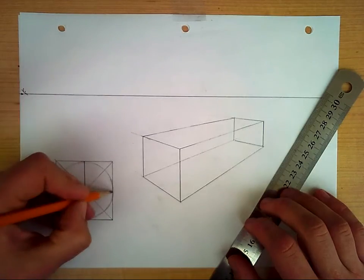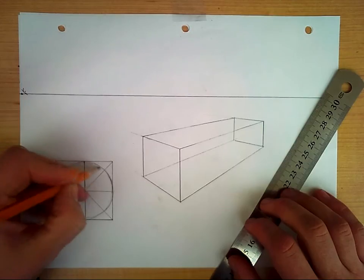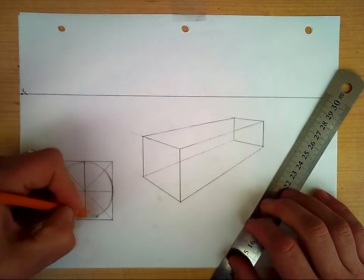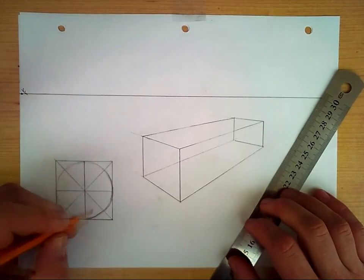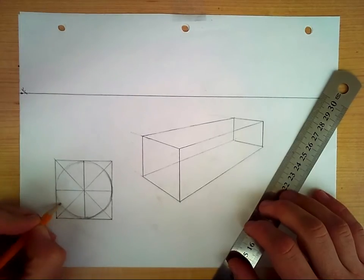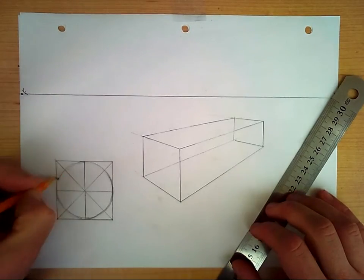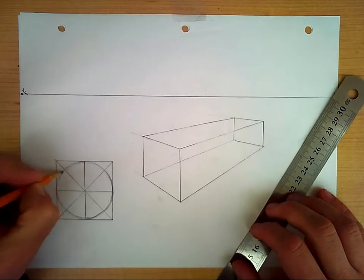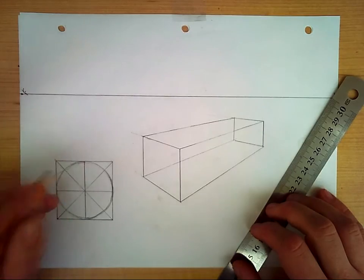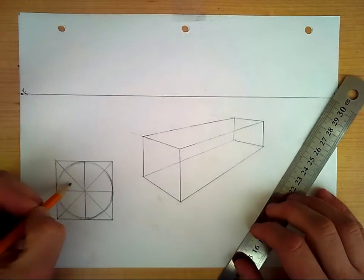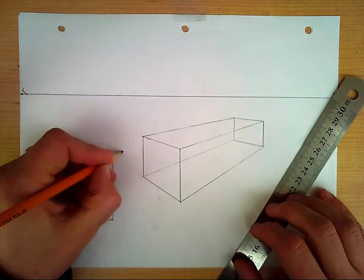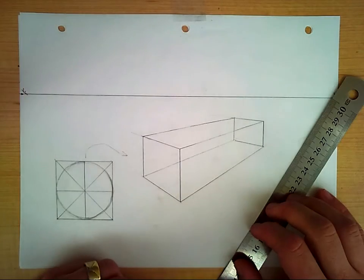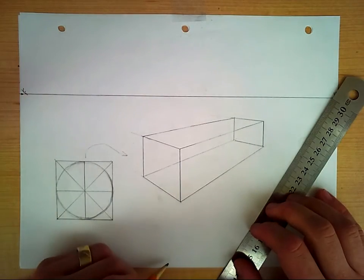Then we actually draw in the circle by connecting the center point of each face of that square. This is where you let go of the ruler and do a few lines to perfect a nice angle.